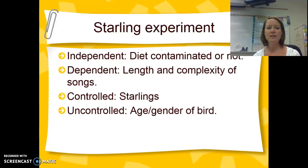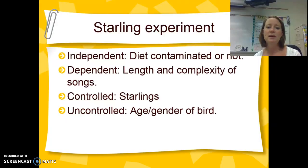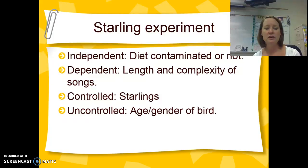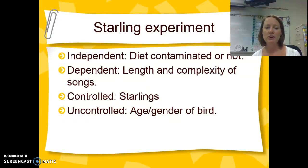The independent variable is their diet — was it contaminated or not? The dependent variable is the length and complexity of the songs, which we measured. The controlled variable is that we had the same types of birds — they were all starlings. Things that we could not control were the age and gender, whether they were male or female, or how old the birds were.